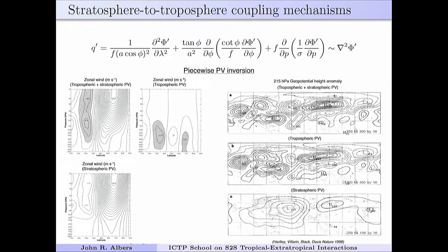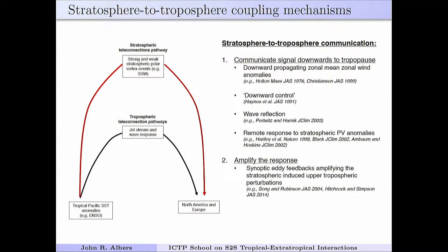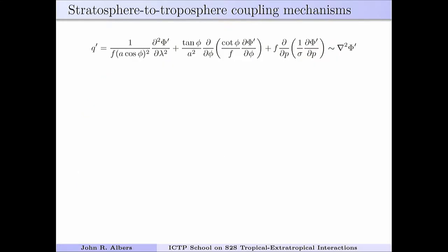There's no causality here, but keep in mind that something happening in the stratosphere — like a weakened polar vortex — prints something on the troposphere, and then there's probably some feedback with tropospheric anomalies. Whether it's wave reflection, downward control, or other theories, you have to translate that polar vortex anomaly in the stratosphere and get it to the tropopause in order to alter tropospheric weather.